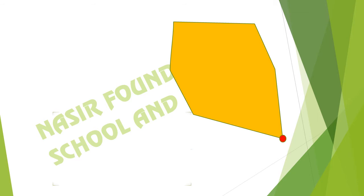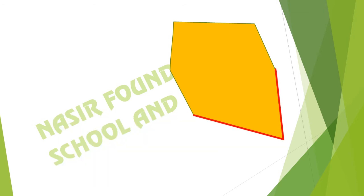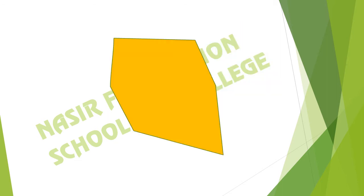Where the two lines meet on the polygon, this is the vertex. A corner where two line segments meet is called the vertex. In this polygon, there are two lines meeting at this point — this is the vertex. You will see that there are also two lines meeting here — this is also the vertex.